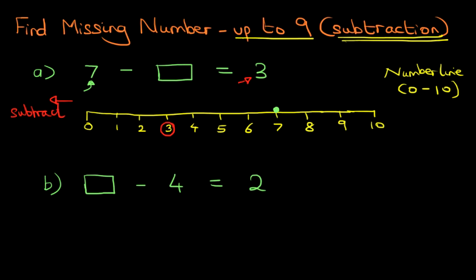So, we're starting at number 7, and we're going to make the jumps to get to 3. The number of jumps we make is our answer. So, let's do this. Count with me: 1, 2, 3, and 4. How many jumps did we make? 1, 2, 3, and 4. So, we have made 4 jumps. That is our answer: 4.